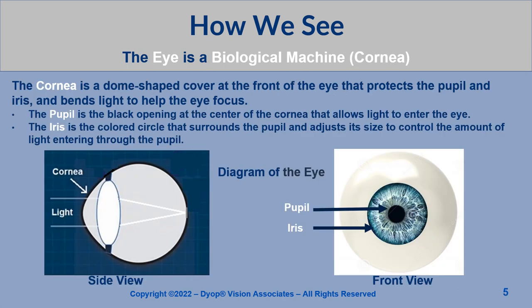The cornea is a dome-shaped cover at the front of the eye that protects the pupil and iris and bends light to help the eye focus. The pupil is the black opening at the center of the cornea that allows light to enter the eye. The iris is the colored circle that surrounds the pupil and adjusts its size to control the amount of light entering through the pupil.